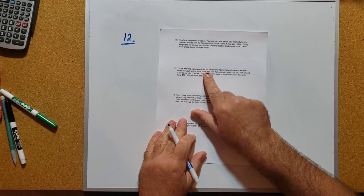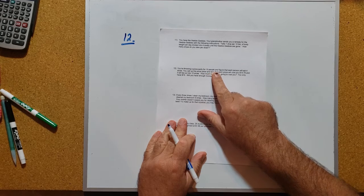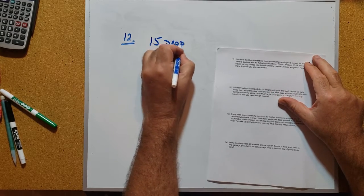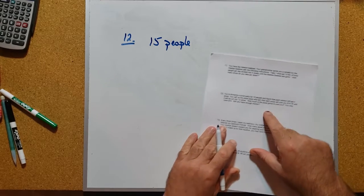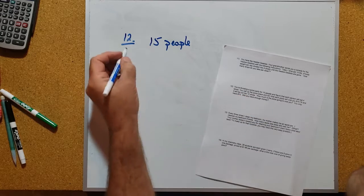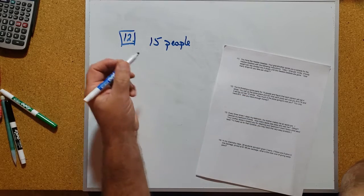It says you're throwing a pizza party for 15 people. We're trying to feed 15 people at this party and we figure that each person will eat four slices, so we can set up a conversion factor here.